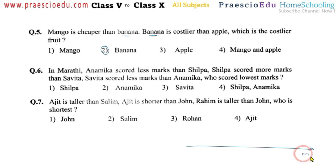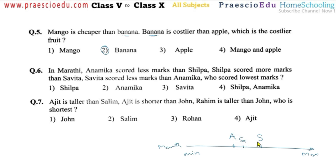Question number six: in Marathi, Anamika scored less marks than Silva, so Silva scored more marks. Then Silva scored more marks than Savita — so Savita is placed below Silva. Then Savita scored less marks than Anamika, so Savita goes below Anamika. Who scored the lowest marks? As per this comparison, Savita scored the lowest marks, so option number three is correct.